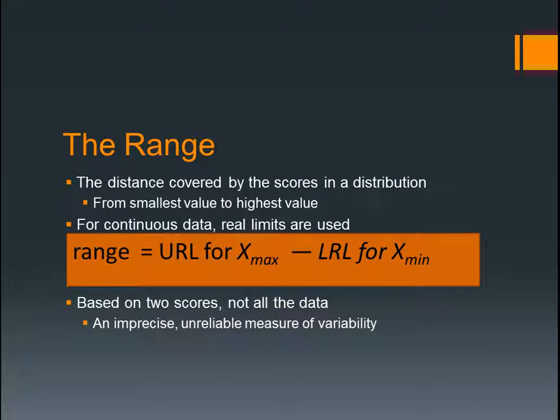The range is the easiest in my opinion. It is the distance covered by the scores in the distribution from the smallest value to the highest value. For continuous data, real limits are used. So the formula is your upper real limit for x minus the lower real limit for x, maximum and minimum. It is based on just the two scores, so not all the data, and it's an imprecise, unreliable measure of variability — probably because the formula is the easiest. So unfortunately we don't use this one very often.